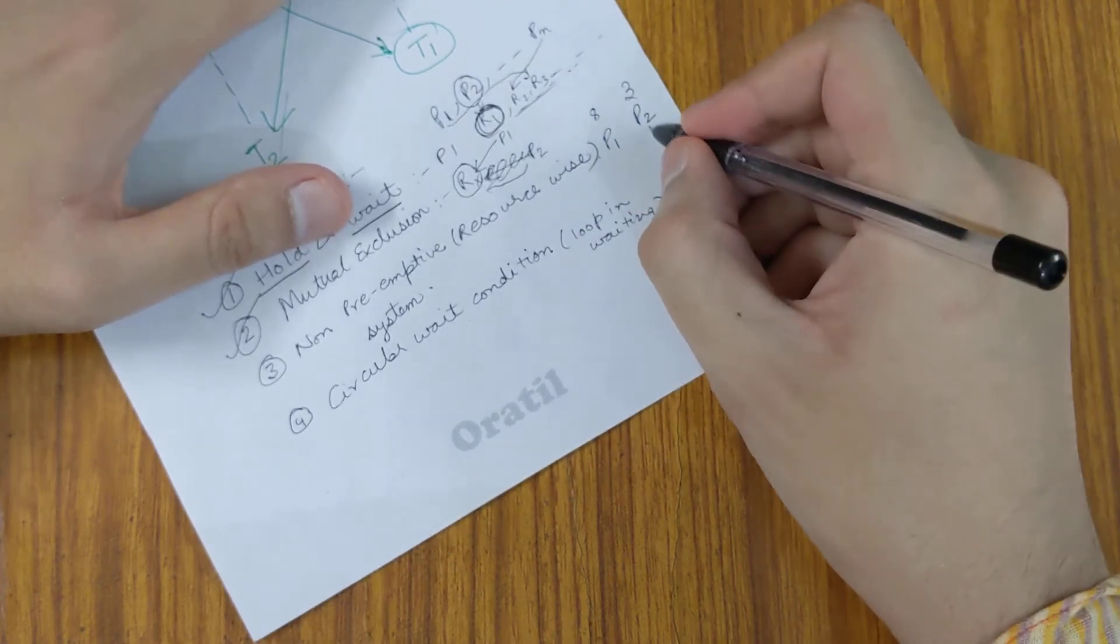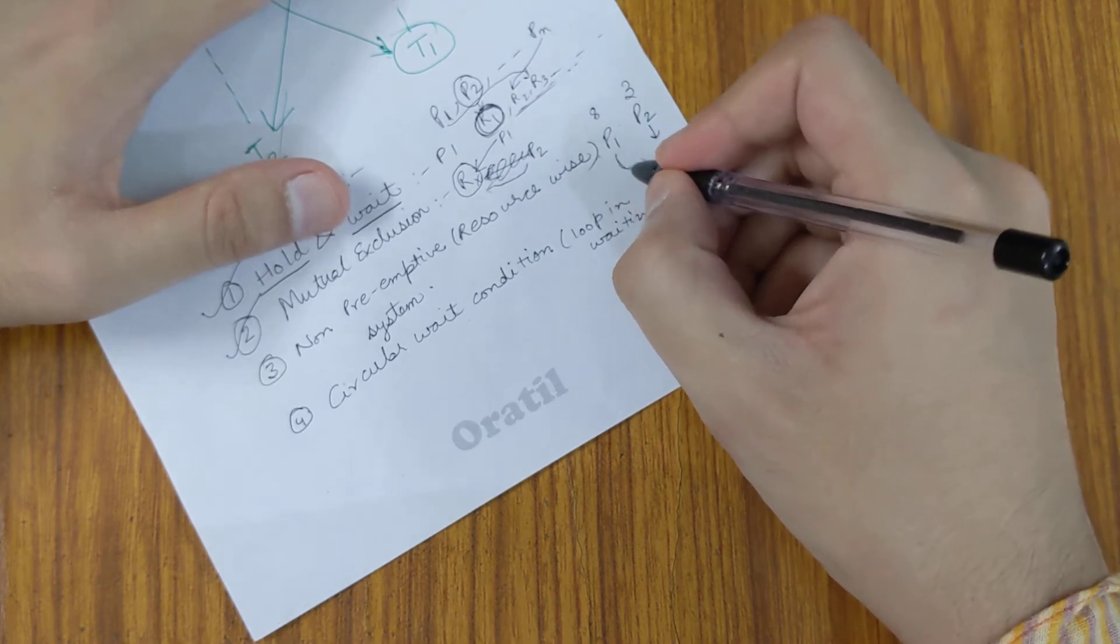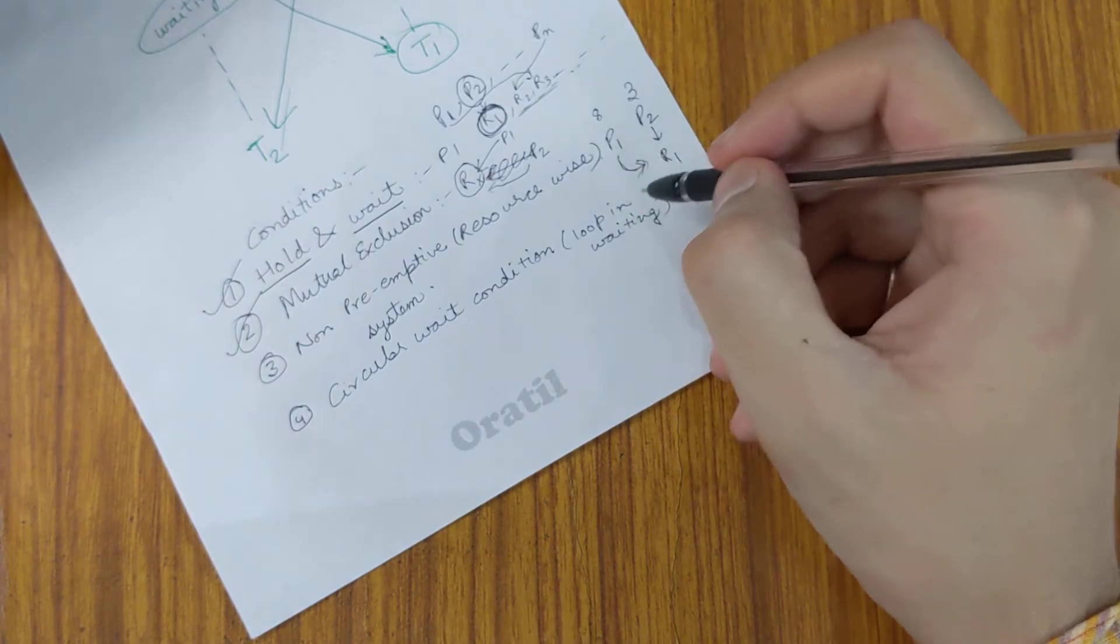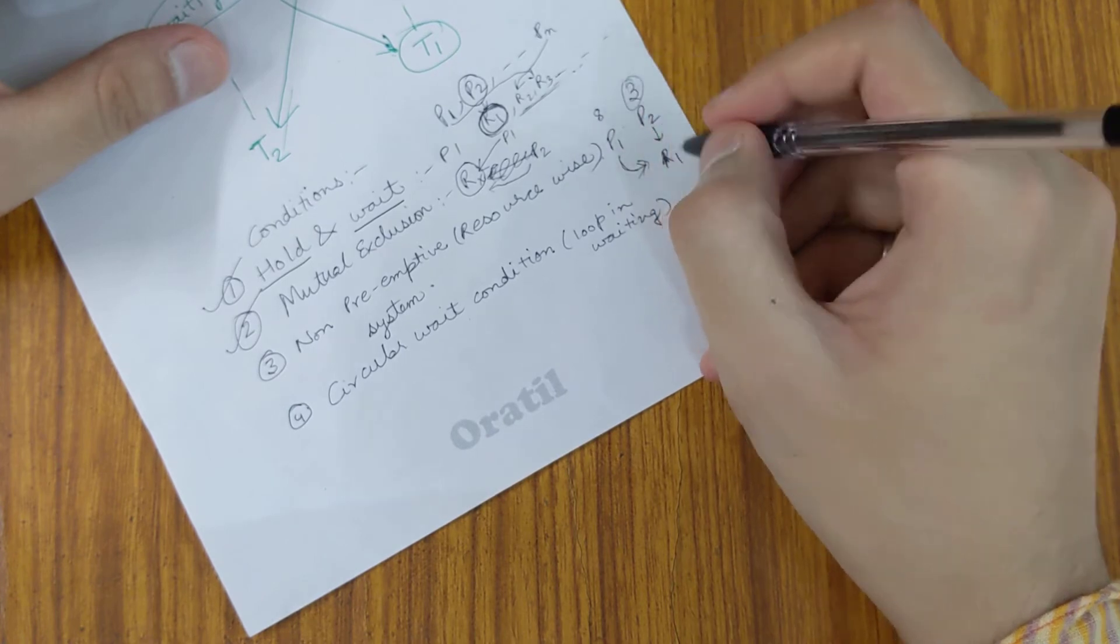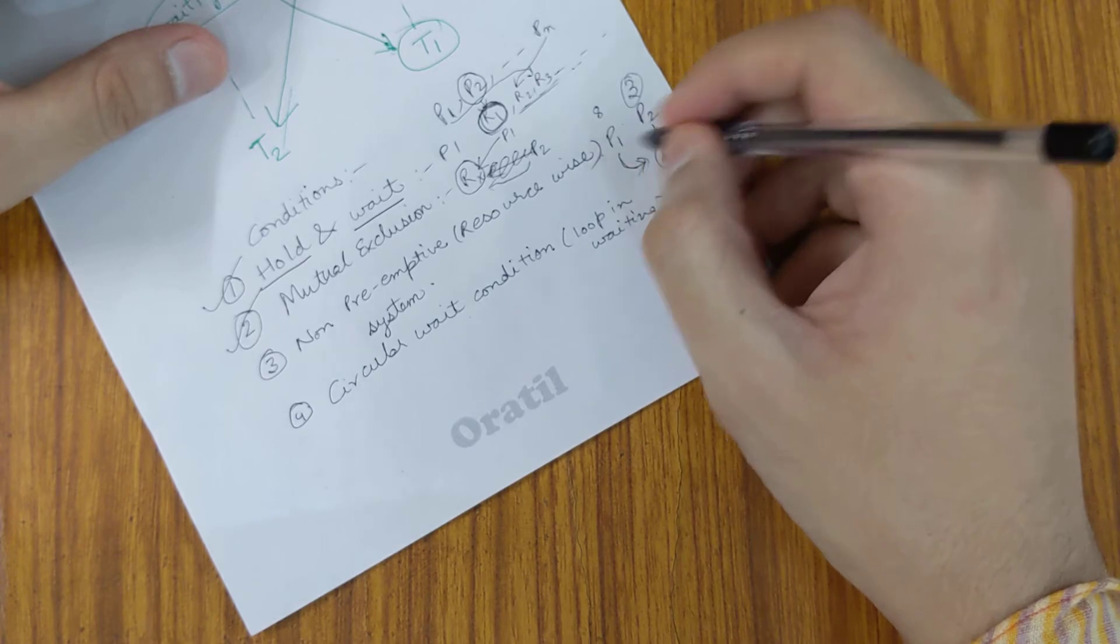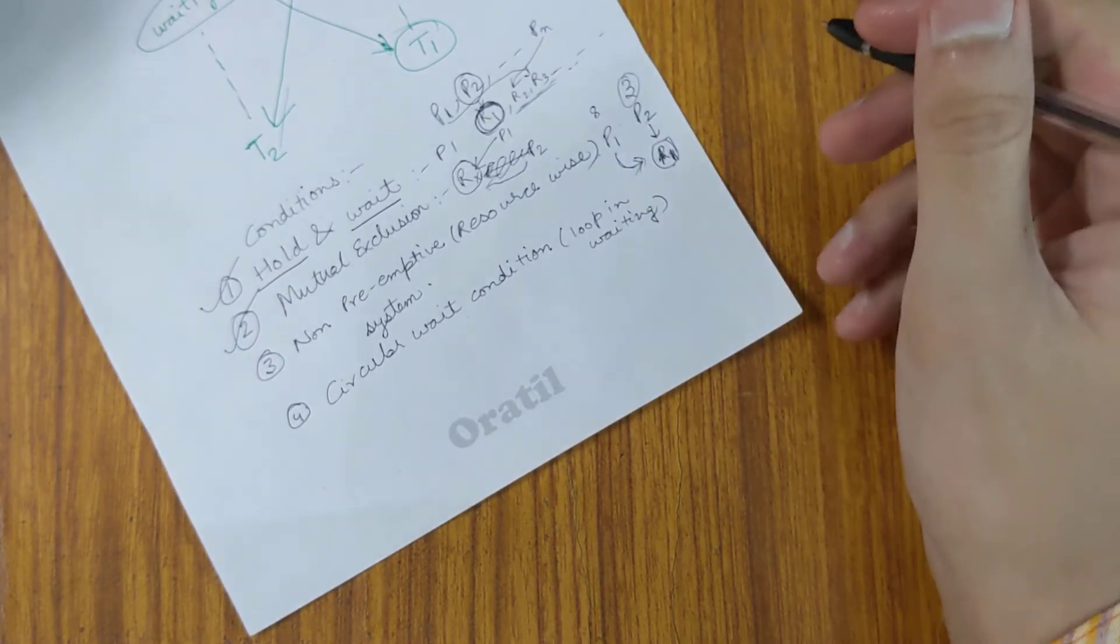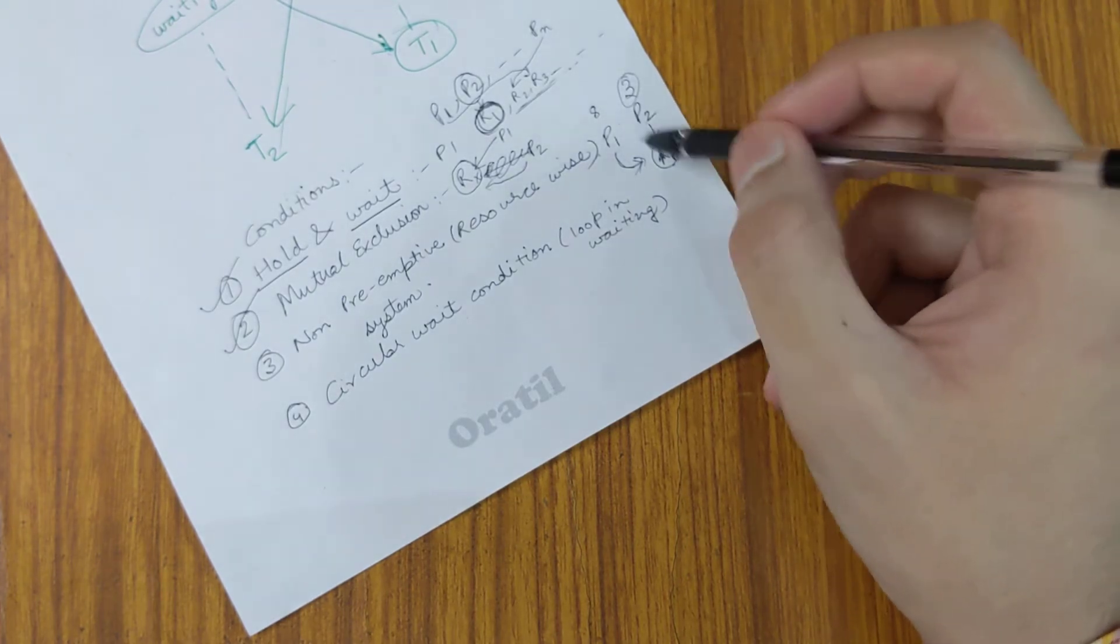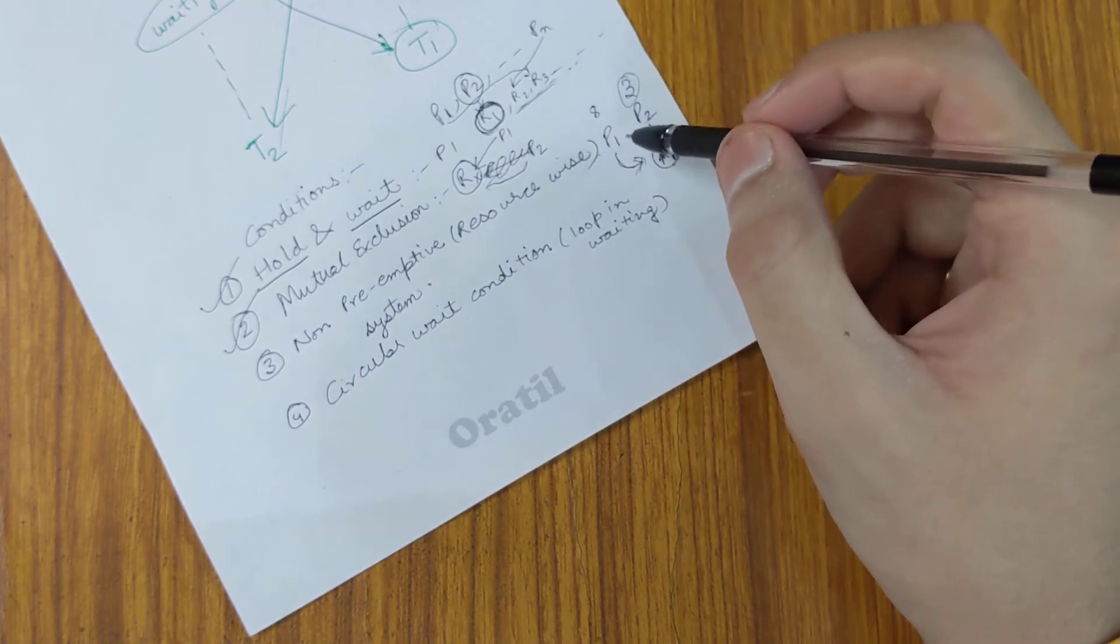P1 cannot just grab R1 from a process of lower priority - it has to wait till P2 releases R1. So it cannot preempt a lower priority process and get hold of the resource. R1 has to be released by P2 itself, and only then can P1 get hold of it. I hope this condition is also clear.